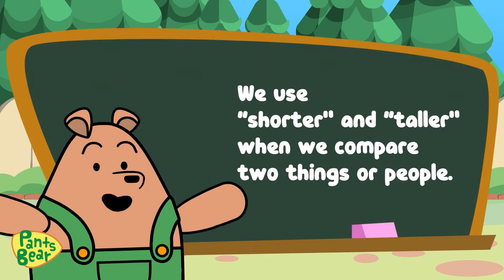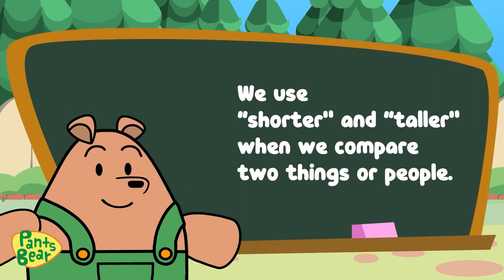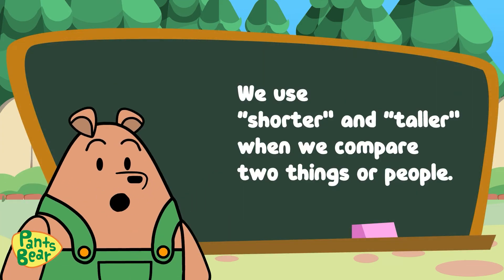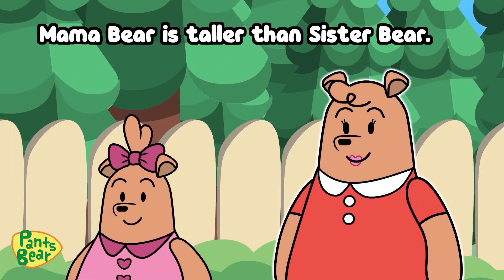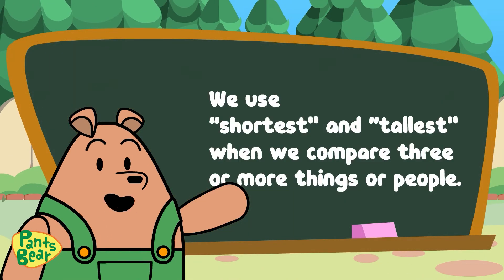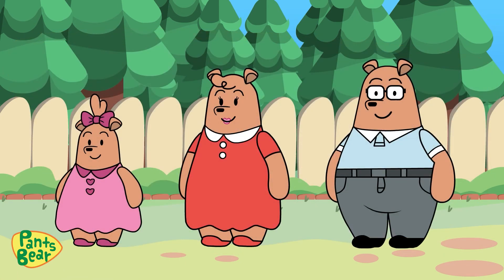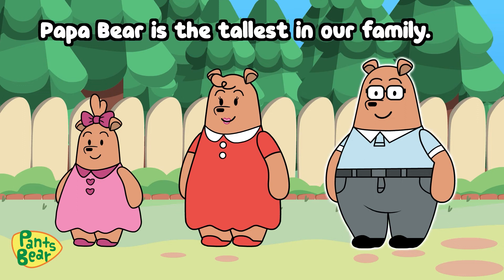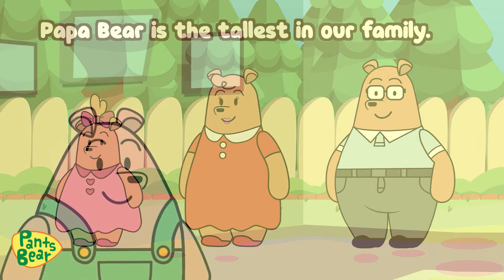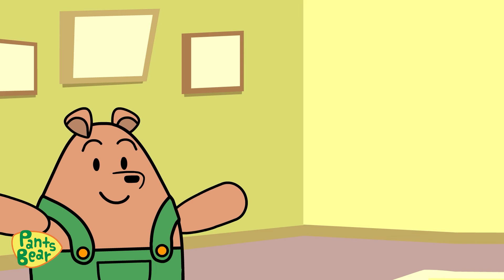We use 'shorter' and 'taller' when we compare two things or people. For example, Mama Bear is taller than Sister Bear. Meanwhile, we use 'shortest' and 'tallest' when we compare three or more things or people. For example, Papa Bear is the tallest in our family. That's how you compare heights.